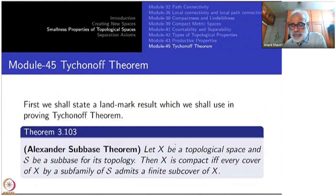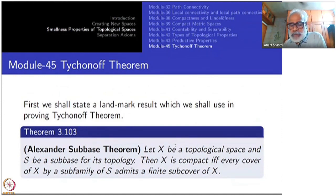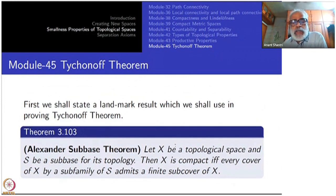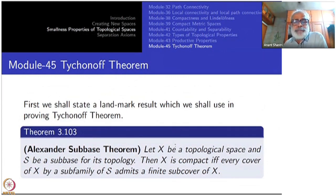Let X be a topological space and fix a subbase S for its topology. Then X is compact if and only if every cover of X by a subfamily of S admits a finite subcover for X.